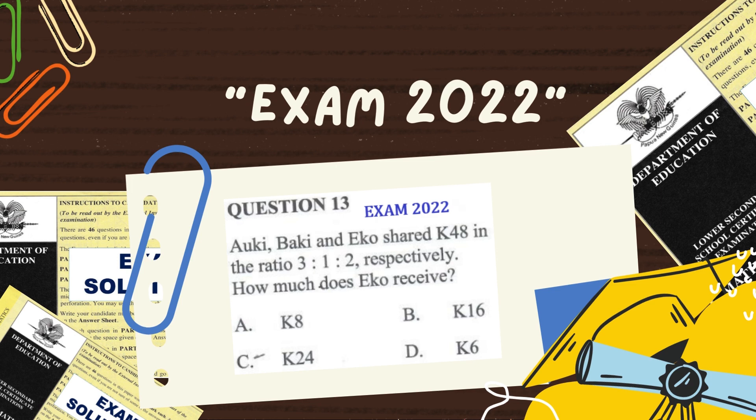Aoki, Baki, and Eco shared 48 kina in the ratio 3 is to 1 is to 2, respectively. How much does Eco receive?